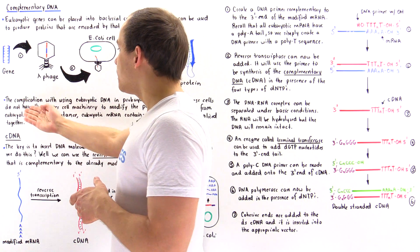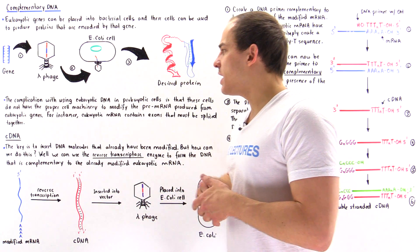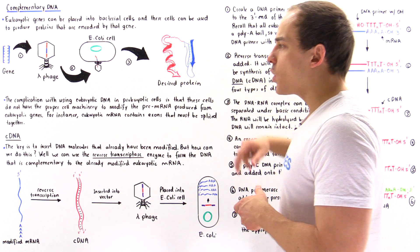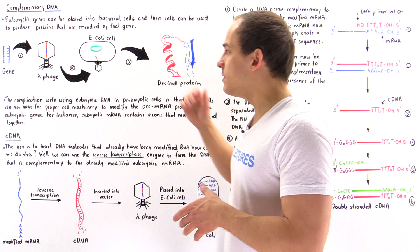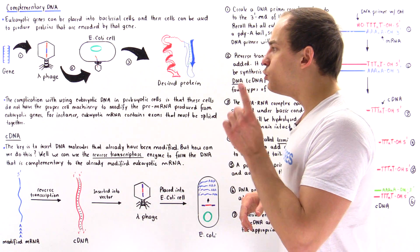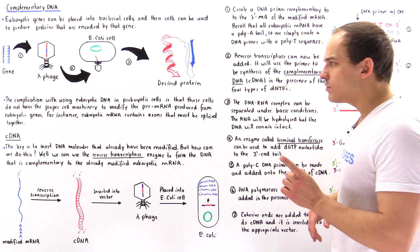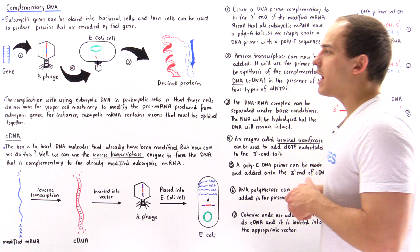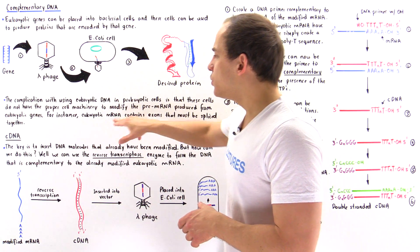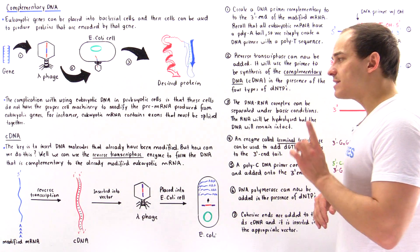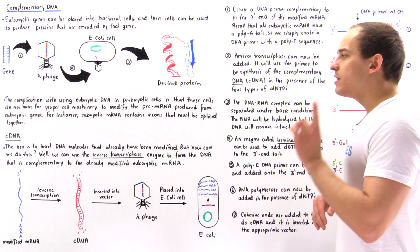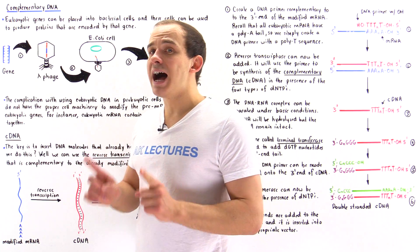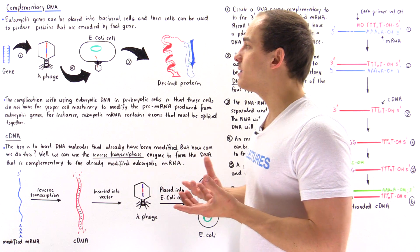The complication with using eukaryotic DNA in prokaryotic cells is that these prokaryotic bacterial cells do not have the proper cell machinery to modify the pre-mRNA produced from eukaryotic genes. For instance, eukaryotic mRNA contains introns that must be spliced out, and the prokaryotic cell cannot carry out the splicing process.